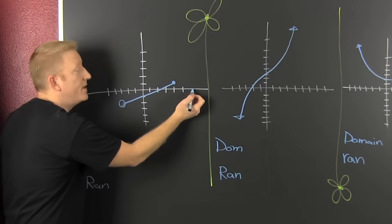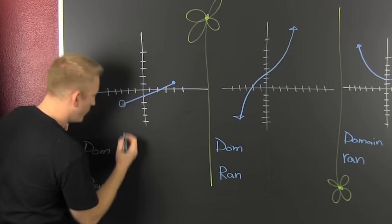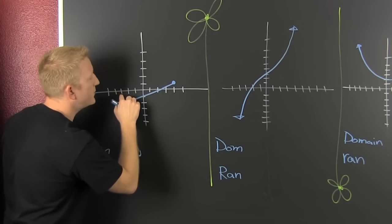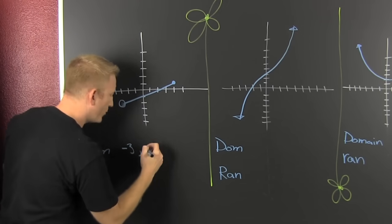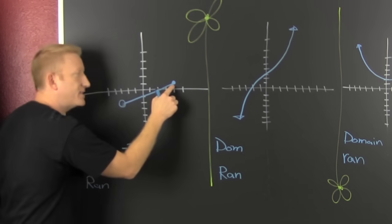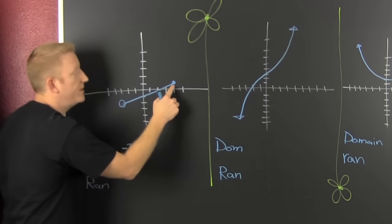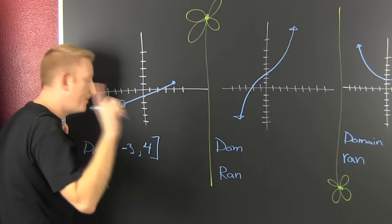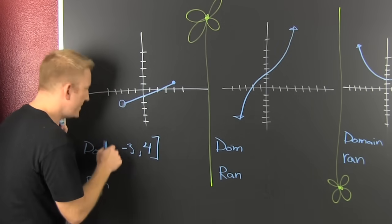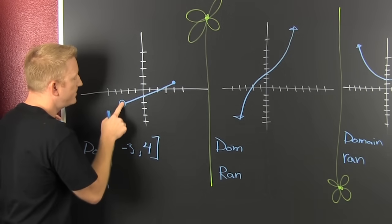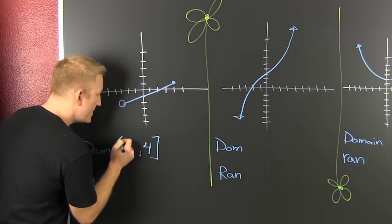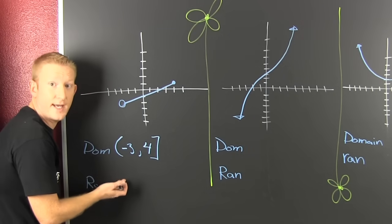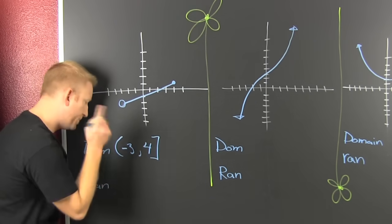The domain goes from what appears to be minus 3 all the way to positive 4. That right side is a closed dot, so it is included — represented by a closed bracket. The left side is an open dot, so it uses an open parenthesis. That gives us a half-open, half-closed interval.